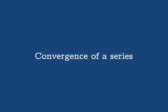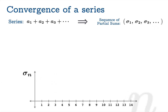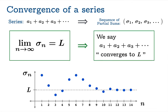Now we're ready to define what it means for a series to converge. Given a series, you build a sequence of partial sums in the manner just described. If you find that the sequence of partial sums converges to some limiting value L, then we say the series itself converges to L. All you're saying is: the more terms you keep adding, the closer your running total gets to some limiting value. We make this an if and only if — the series converges if and only if its sequence of partial sums converges.